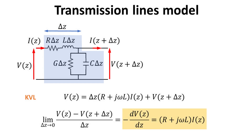Taking the limit delta Z to zero, we arrive at a first-order differential equation relating the spatial derivative of V(Z) with current, as shown in the yellow box.